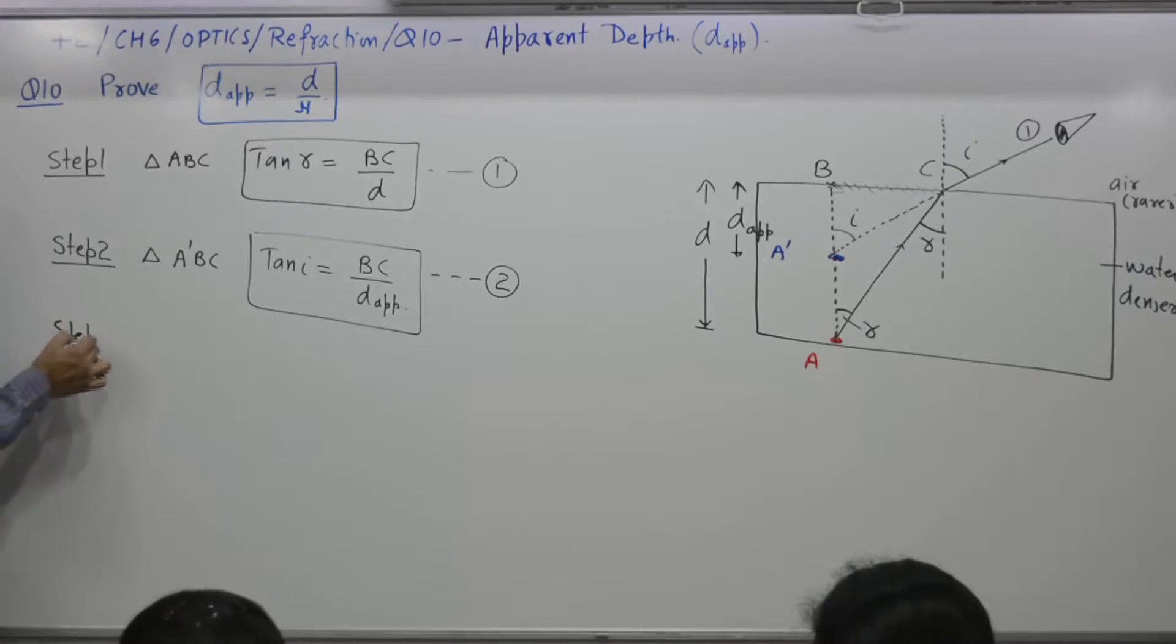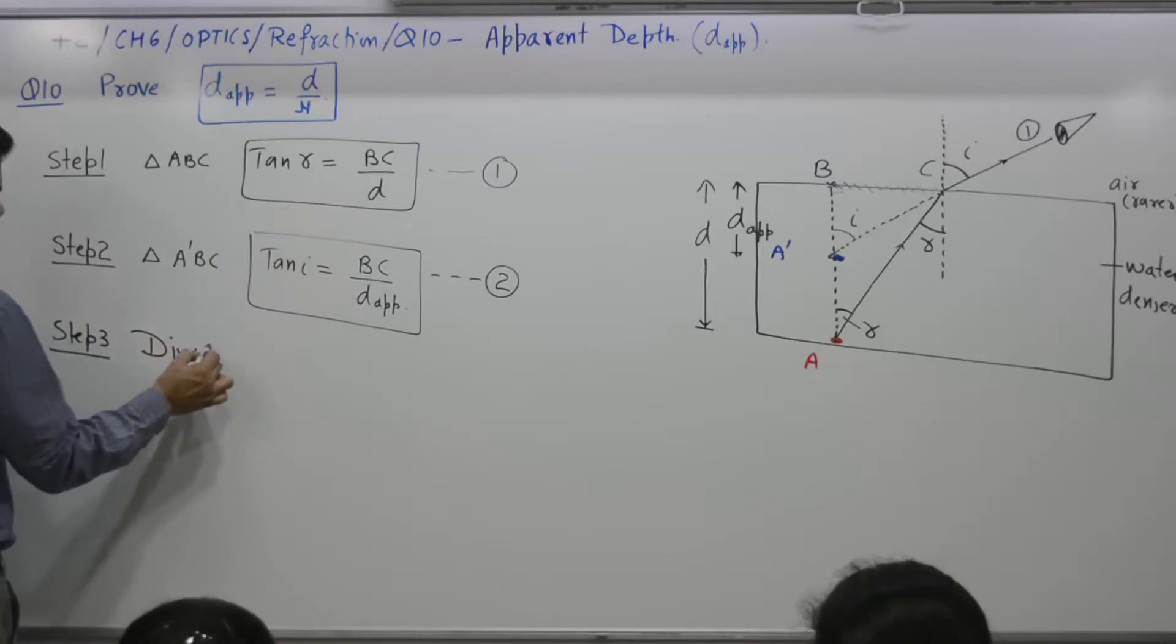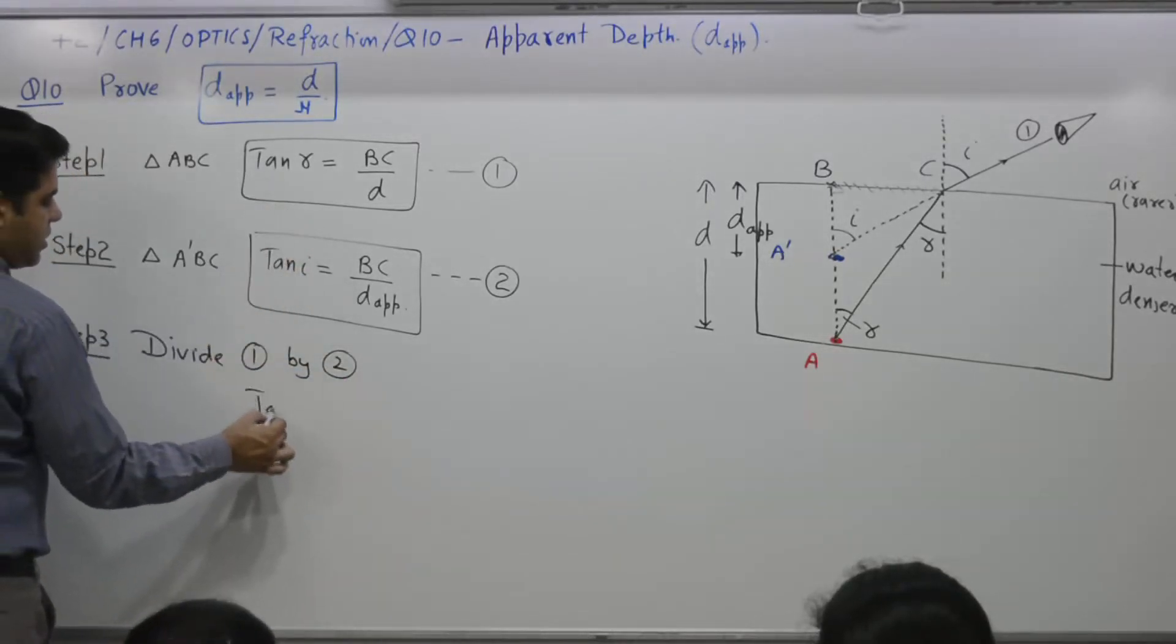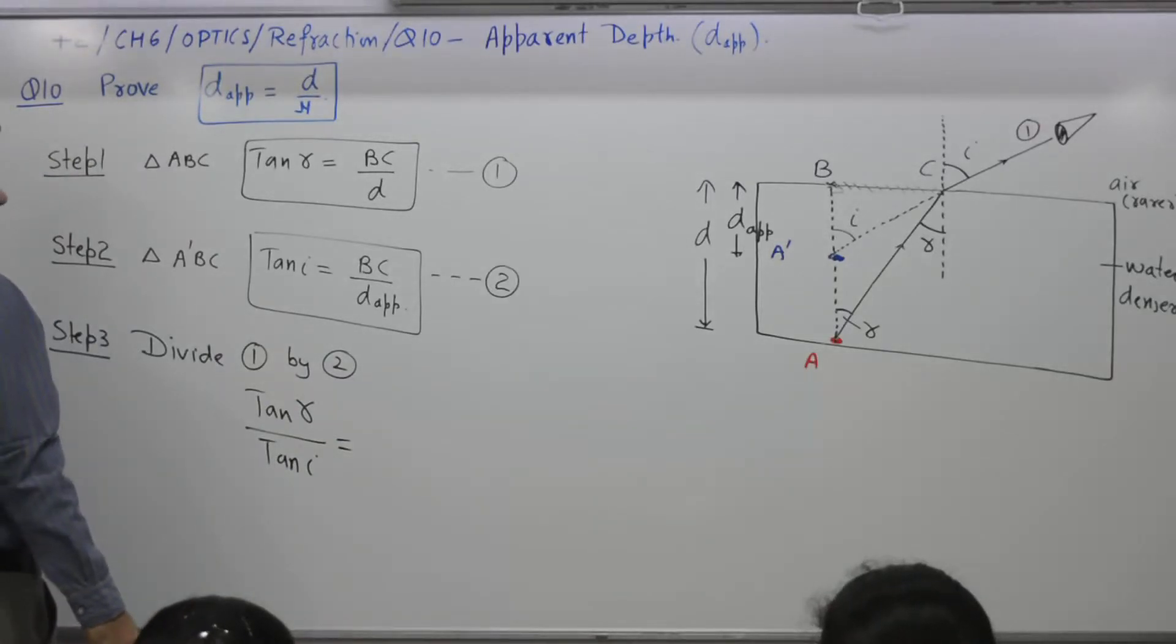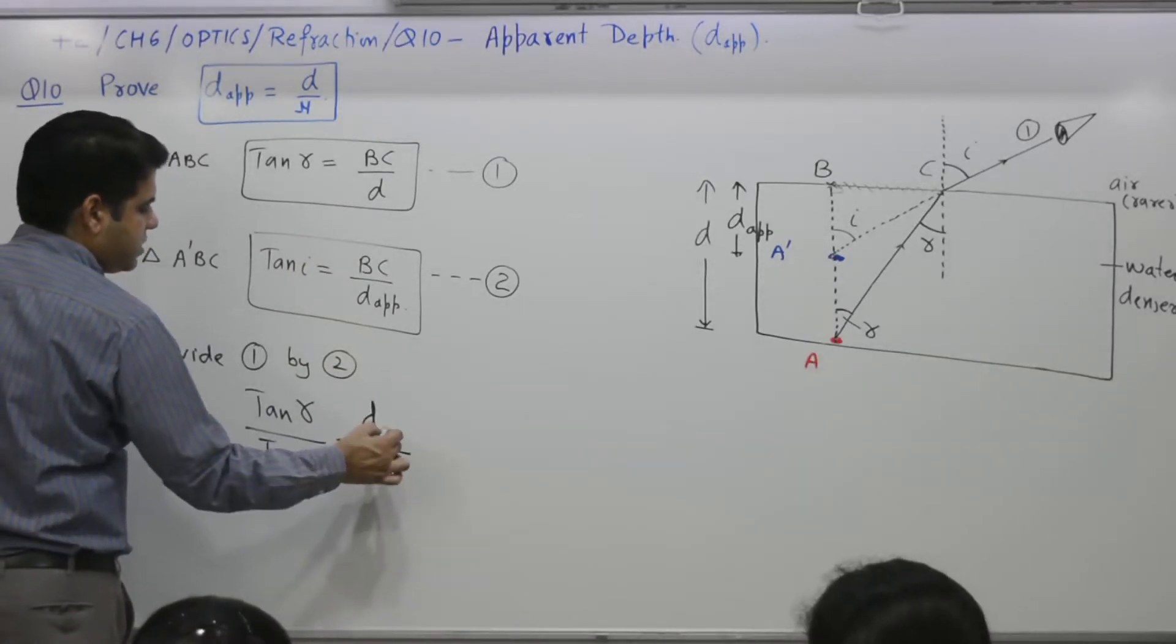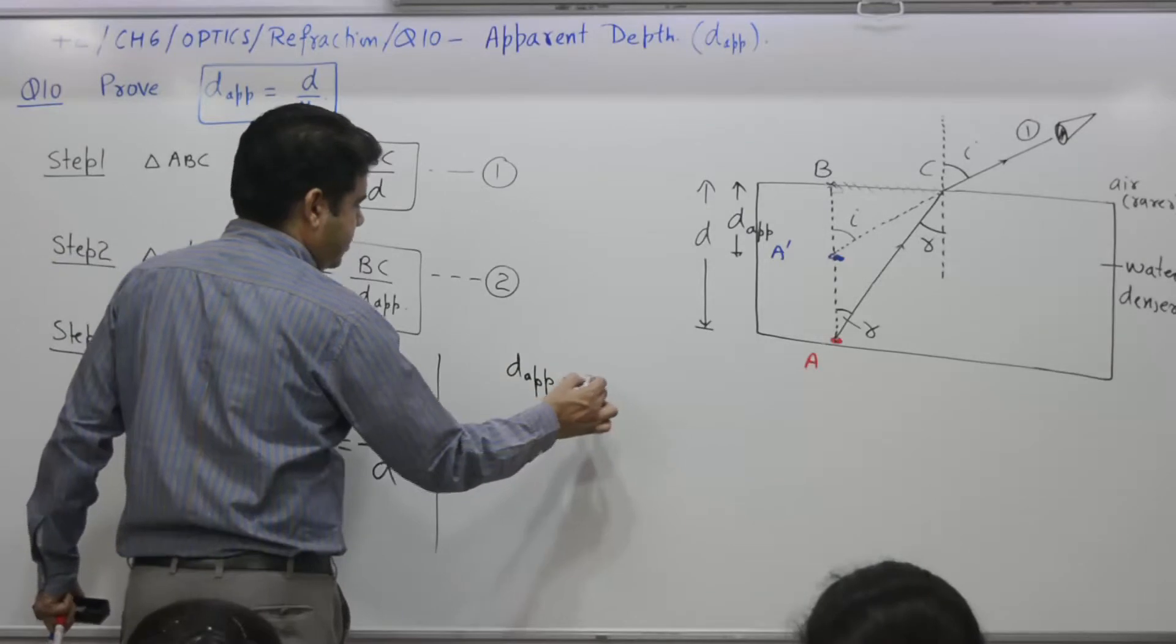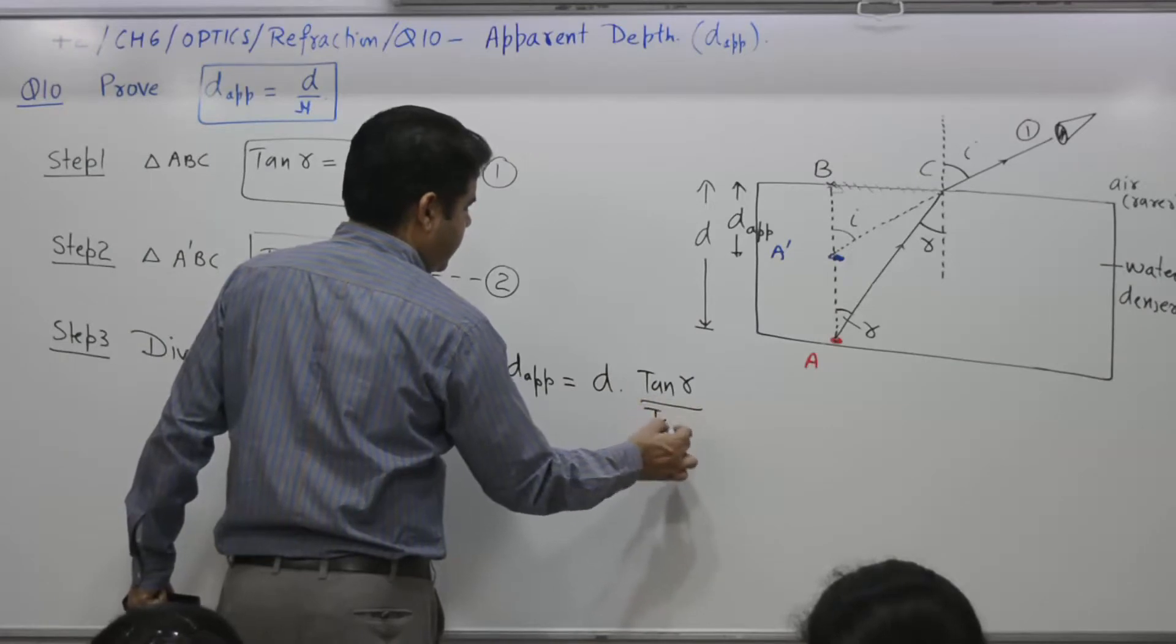Step 3. We have to eliminate BC. Divide equation number 1 by 2. What you get is tangent R by tangent I equals D by D apparent. D apparent is equal to D into tangent R by tangent I.